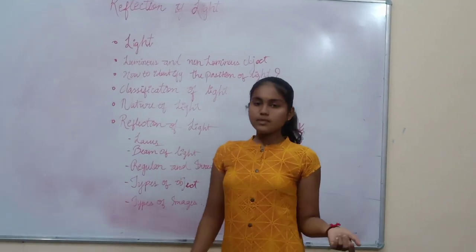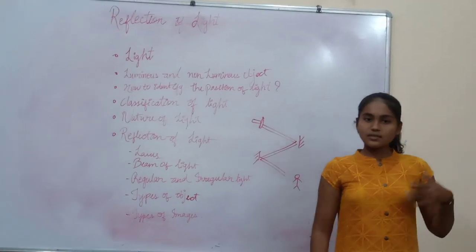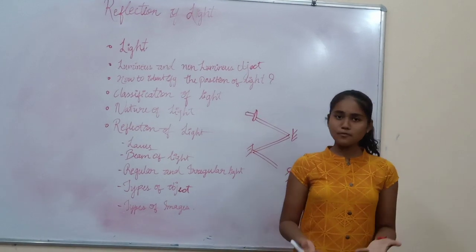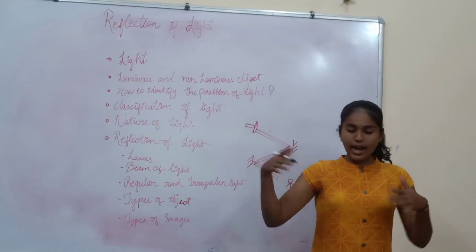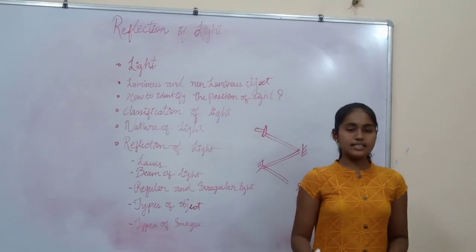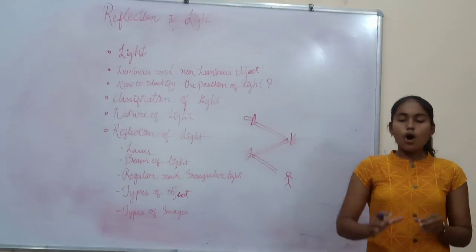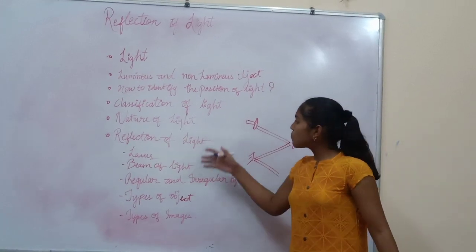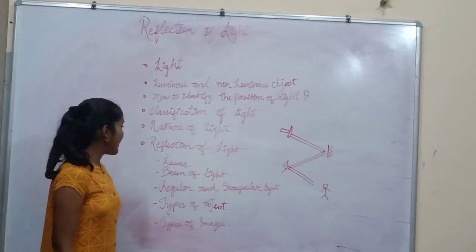Now I will tell some properties of light. As we discussed in our previous classes — speed of light, interference, polarization, reflection, and diffraction, and all other things. The main property of light is rectilinear propagation, which says that light always travels in a straight line. Now let's come to the main point — that is the reflection of light.